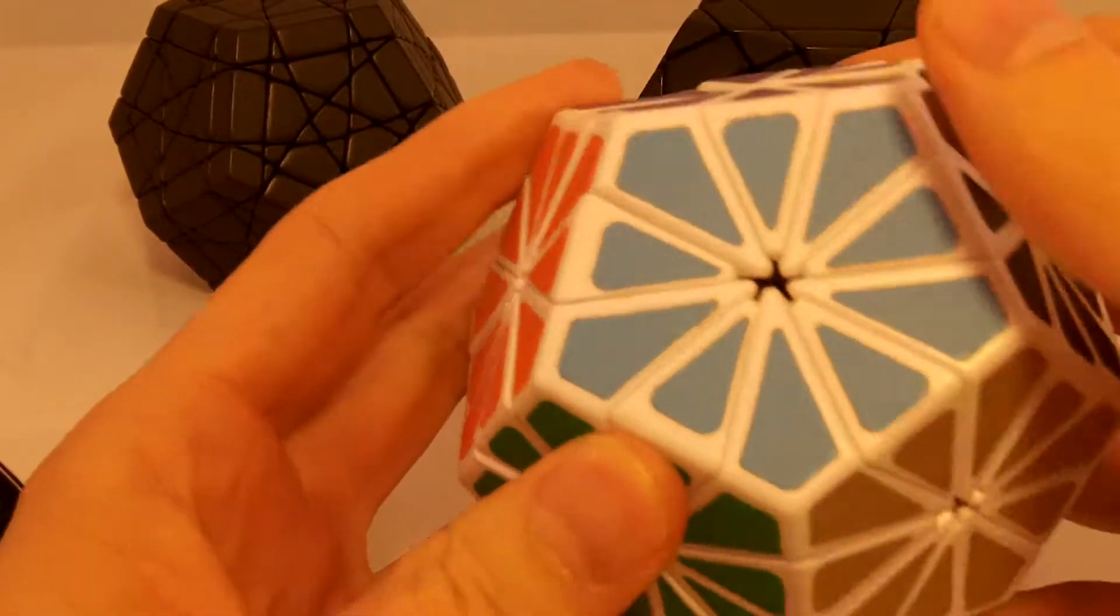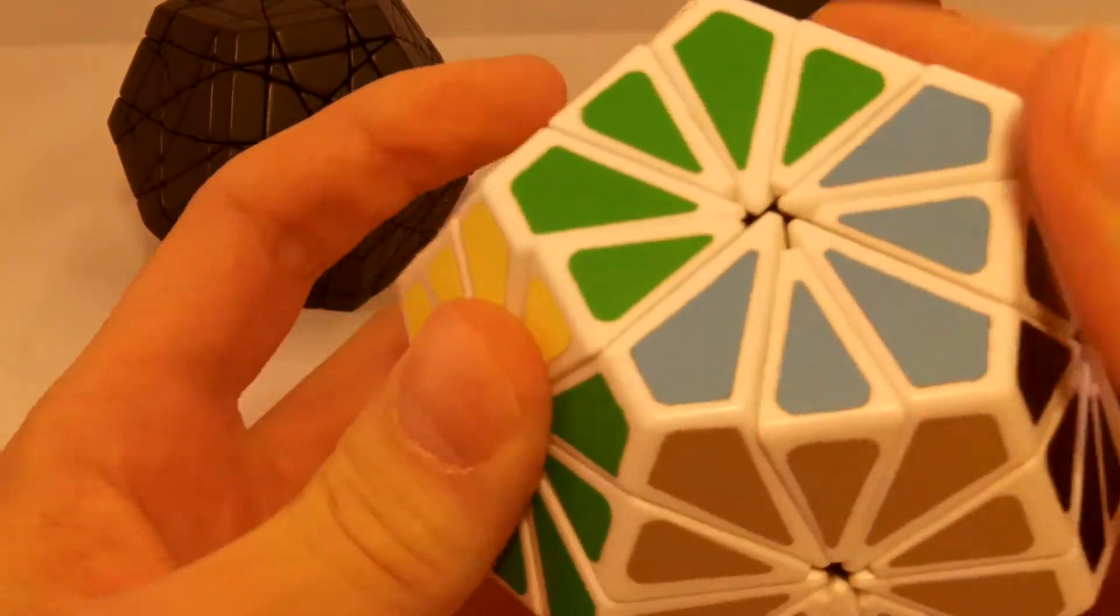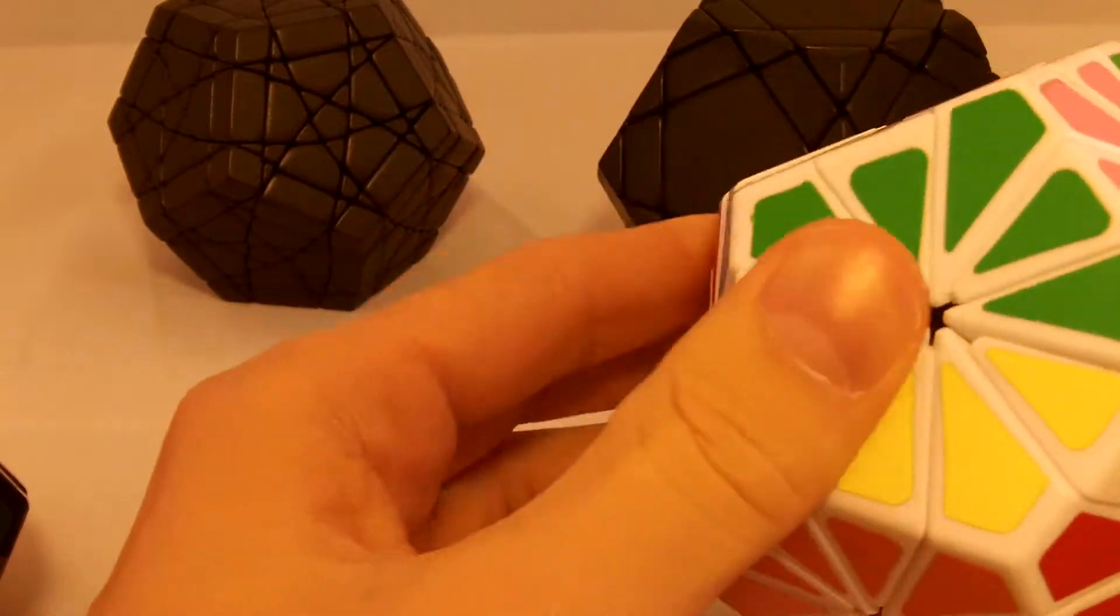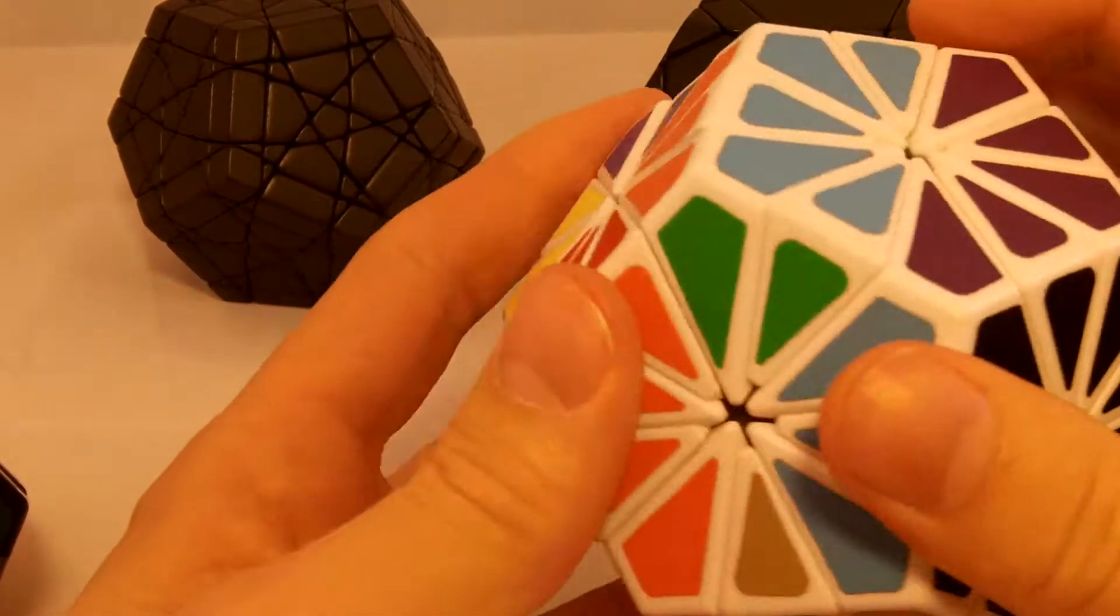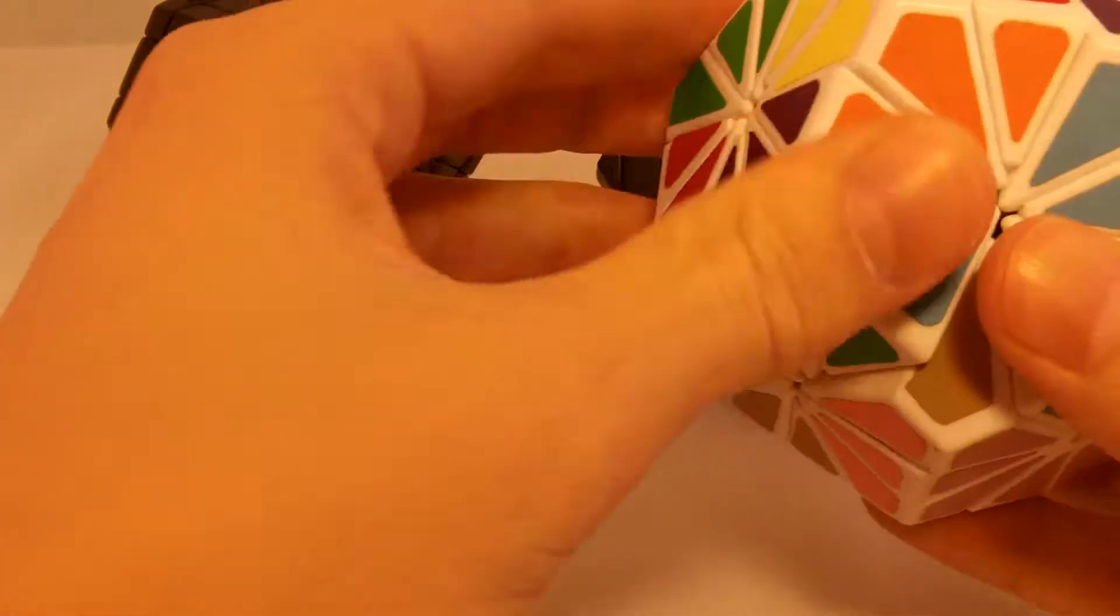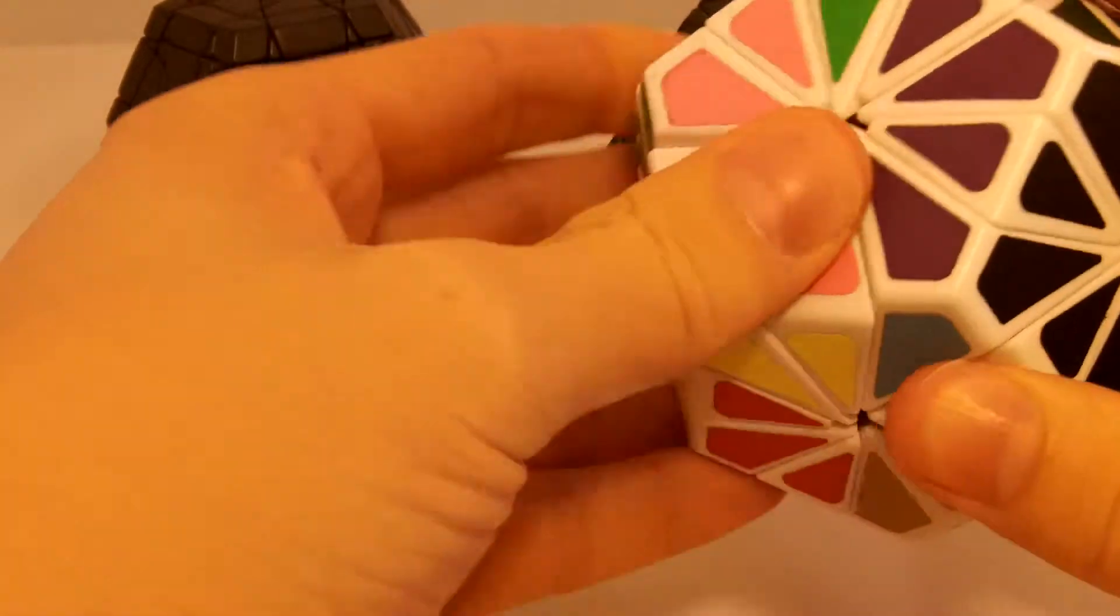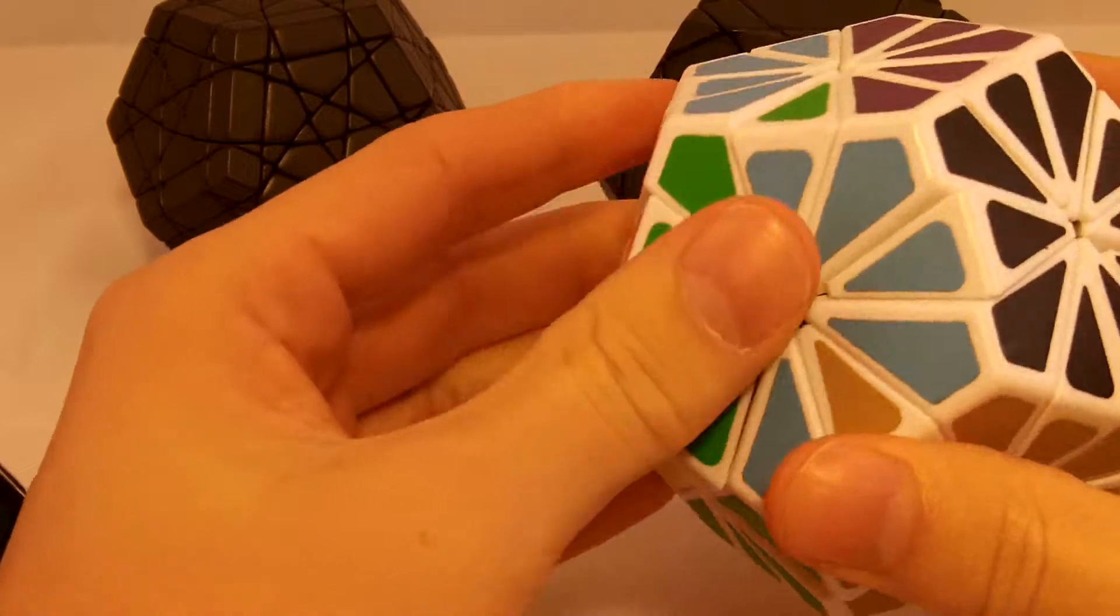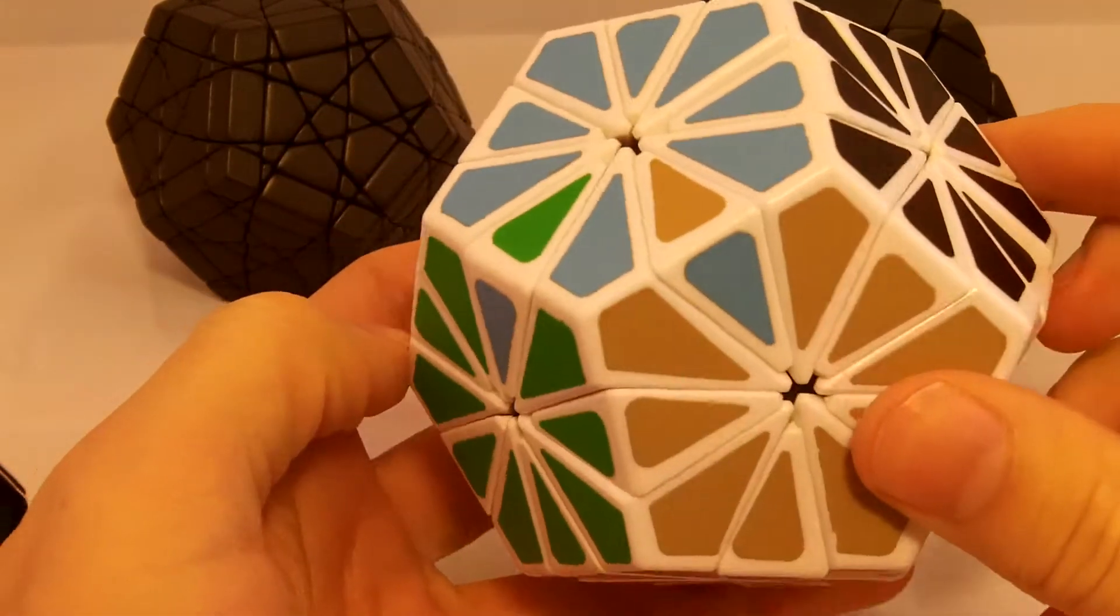Let me try that again. So I'm going to do a setup move here to get that piece into place. Now I'm going to flip this piece. Okay. Now I'm going to do the replacement. I'm going to undo the flip. Undo the replacement. And then undo the setup move. And there we go. I flipped two pieces next to each other.